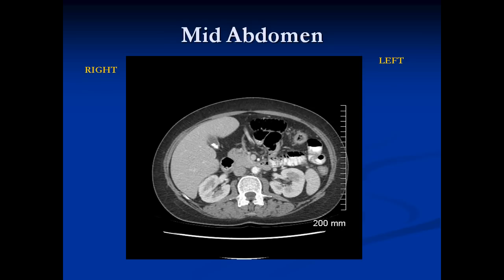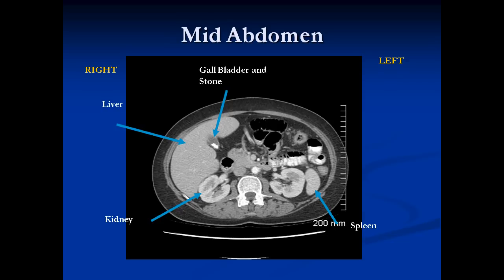Going down a little further in the abdomen, we see other structures. We can see the liver again, and now we notice the kidneys because we're lower down. The kidneys are bilateral, and the cortices and medulla are well-defined when we give IV contrast. This is the spleen. We have the gallbladder here, and there are calcifications within it — the black part is the gallbladder with bile, and the very white part is the stone. We have the head of the pancreas sitting just to the right of the midline, and here we have contrast in loops of small bowel.